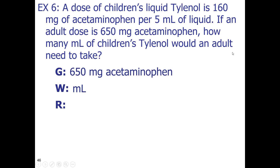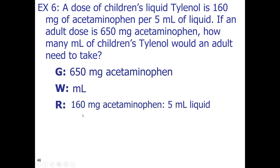The next thing I'm going to do is take that previous statement: 160 milligrams of acetaminophen per 5 milliliters of liquid. So here's what I have — I'm trying to go from milligrams to milliliters, and that's the only ratio you need. So technically I can go ahead and start this problem. I can say 650 milligrams over 1.